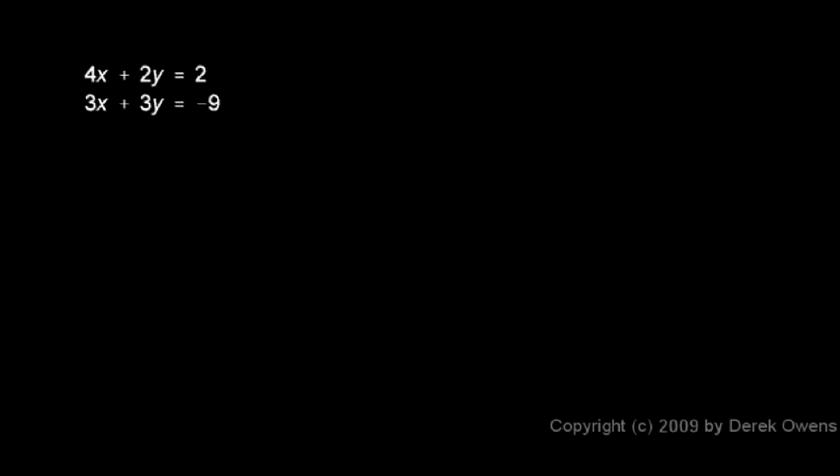I'm going to do something to each equation. I'm going to take the first equation and multiply the equation by 3. And what that means is I multiply both sides of the equation by 3. So the left side is multiplied by 3, and the right side is multiplied by 3.